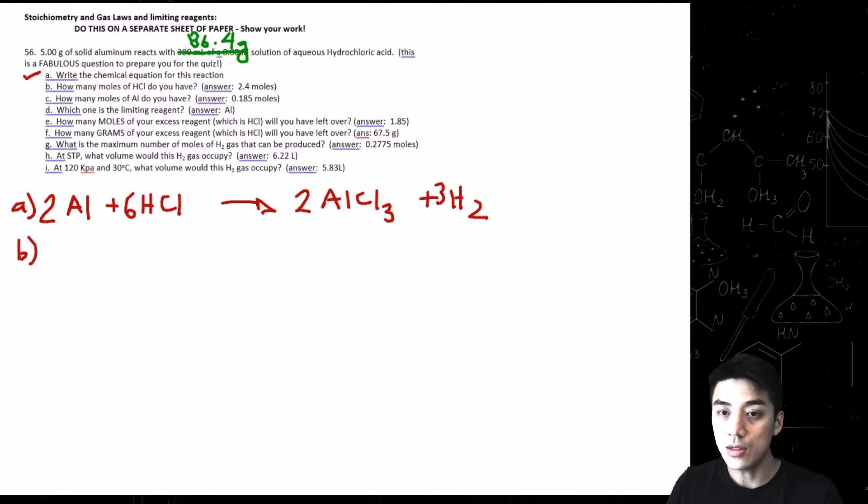Letter B. How many moles of HCl do you have? So we're going to start with 86.4 grams of HCl, and then simply divide by the molar mass of 36 to get it into moles. So 86.4 divide by 36 will give you 2.4 moles of HCl. You can check that one off.